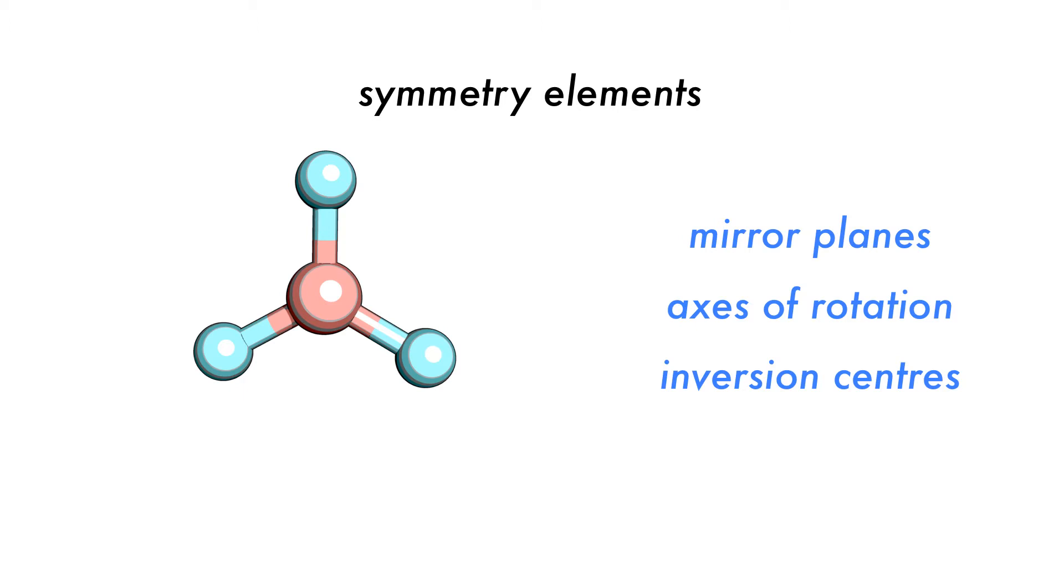When we make a symmetry change, be it a rotation or something else, we call the movement a symmetry operation. To be valid, a symmetry operation must leave the molecule indistinguishable from the previous condition.